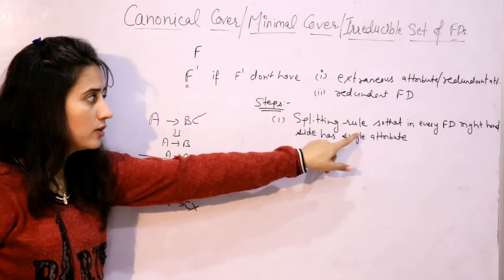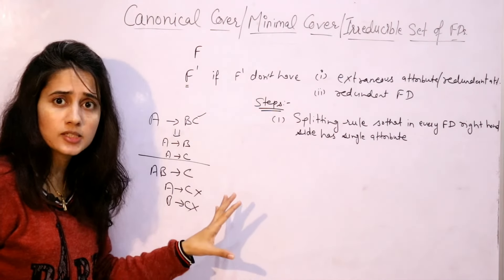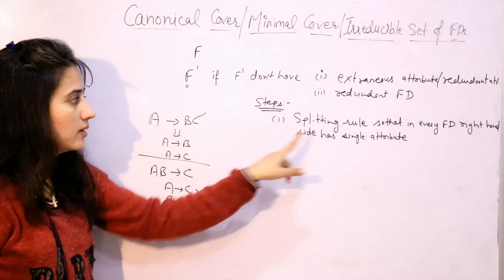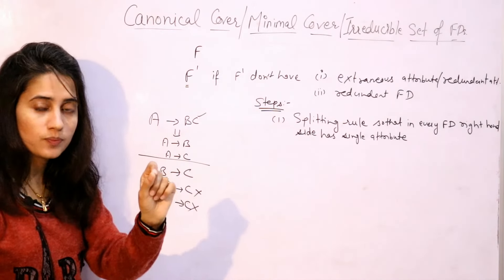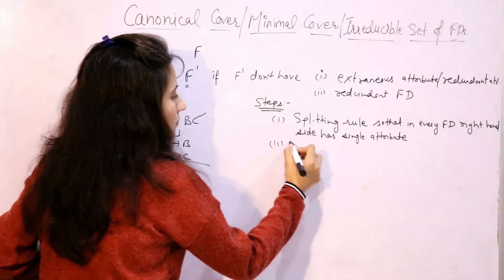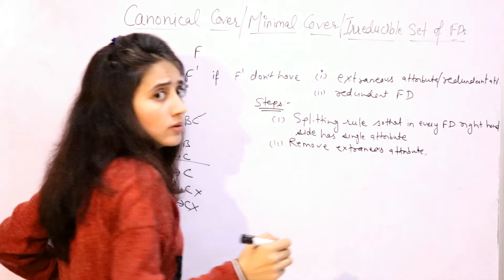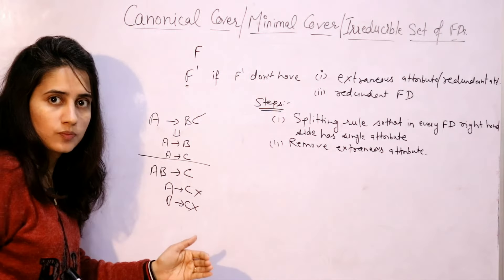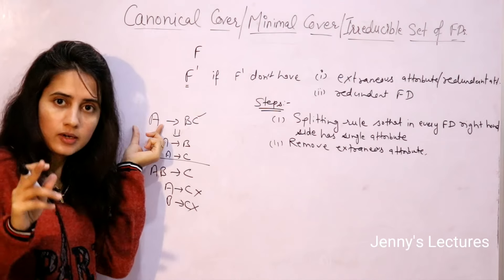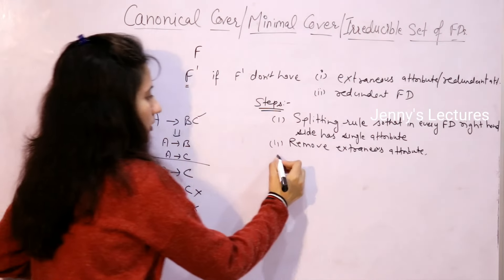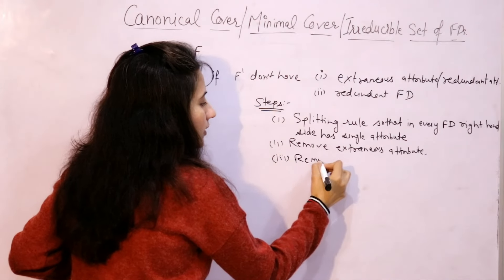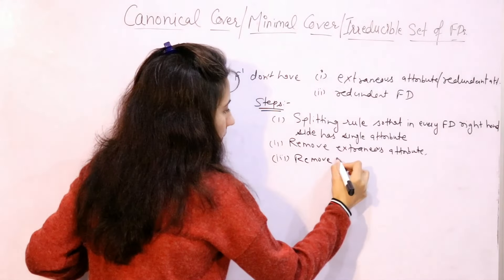Why are we applying the splitting rule? So that in every functional dependency, the right-hand side has a single attribute. That is step one. Next, step two: remove extraneous or redundant attributes — we are going to remove this attribute from the left-hand side. Step three: remove redundant functional dependencies.